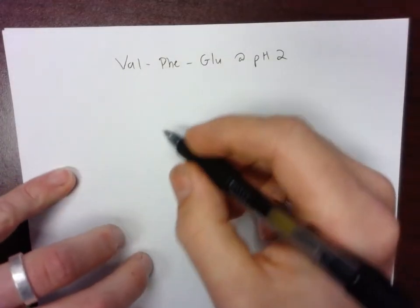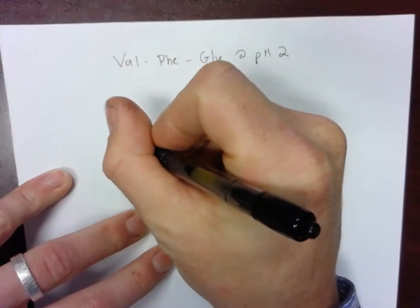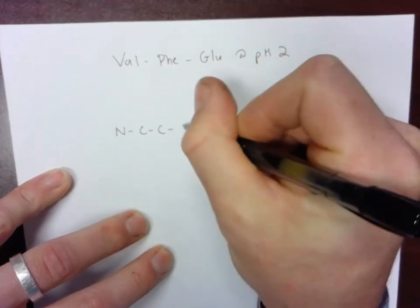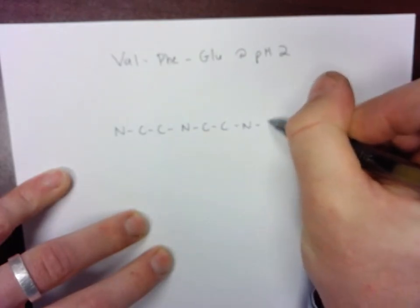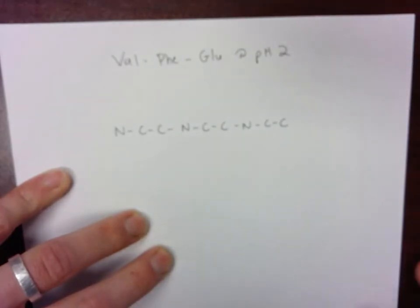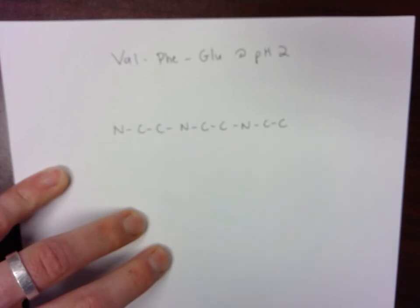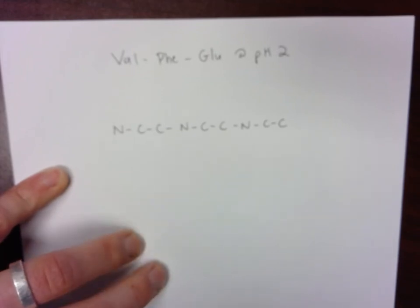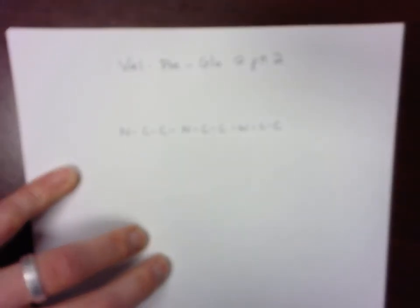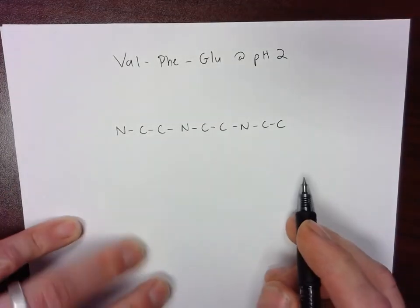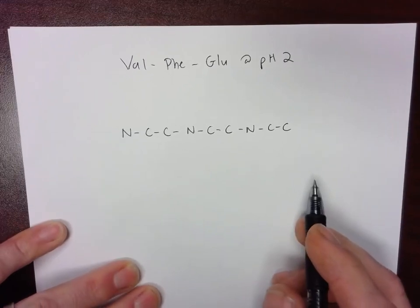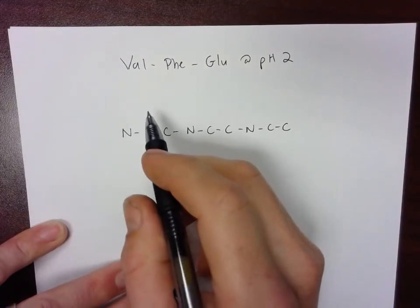I'm going to start by drawing out the backbone from N-terminus to C-terminus. Since there are three amino acids, I'm going to do NCC, NCC, NCC. One NCC for each amino acid, and then I'll start filling in from there.